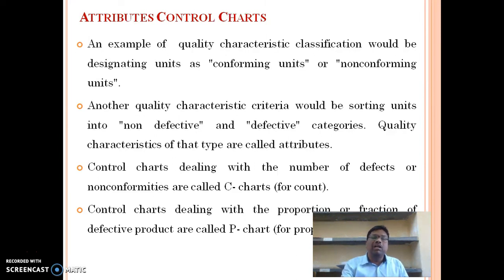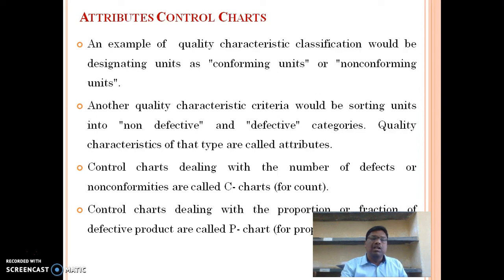For attributes control charts, an example of a quality characteristic classification would be designating units as conforming or non-conforming. Another quality characteristic criterion is sorting units into defective or non-defective categories. Quality characteristics of this type are called attributes. Control charts dealing with the number of defects or non-conformities are called the C chart; control charts dealing with the proportion or fraction defective are called the P chart.